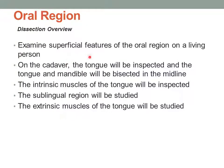First you should examine the superficial features of the oral region on a living person — for instance yourself if you use a mirror. Then on the cadaver you should look at the tongue and the mandible, and you're going to bisect these both in the midline. We're going to inspect and study the intrinsic muscles of the tongue, look at the sublingual region, and also have a look at the extrinsic muscles of the tongue.